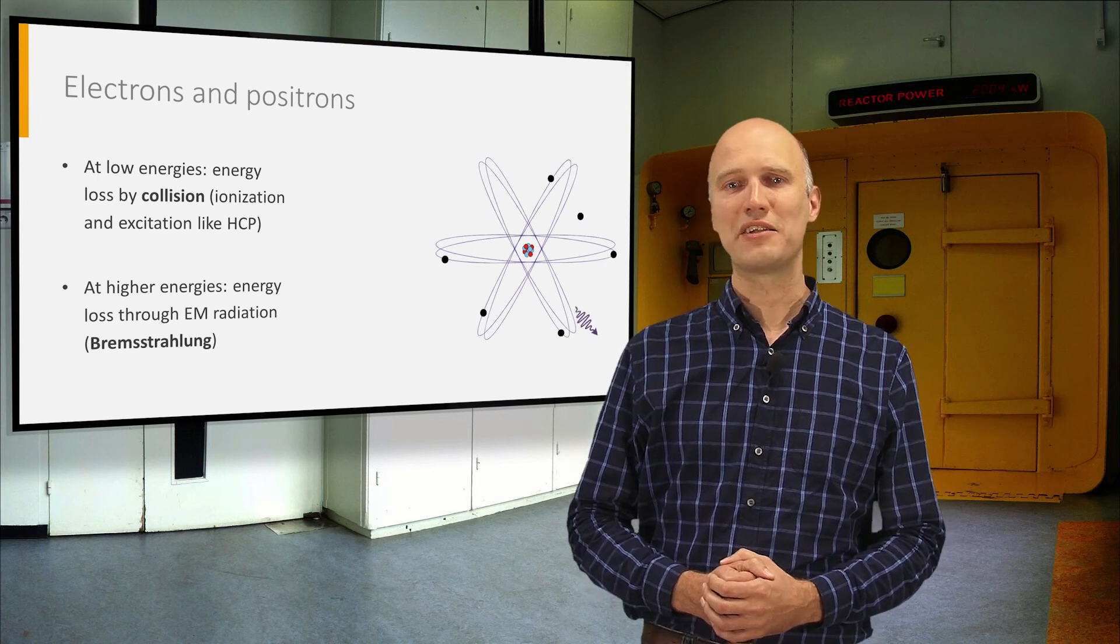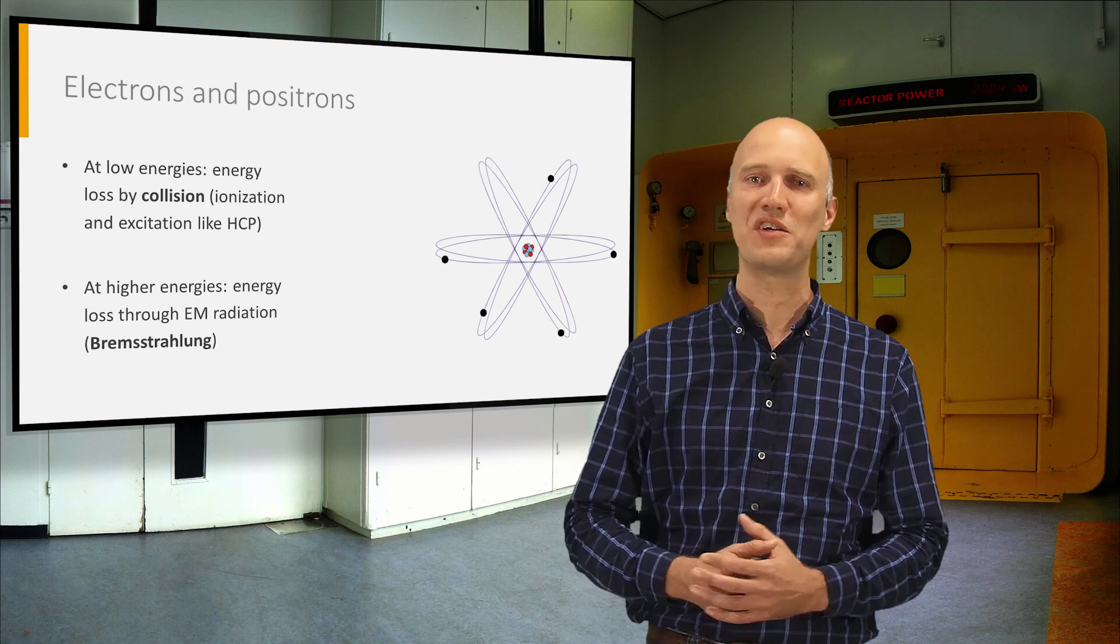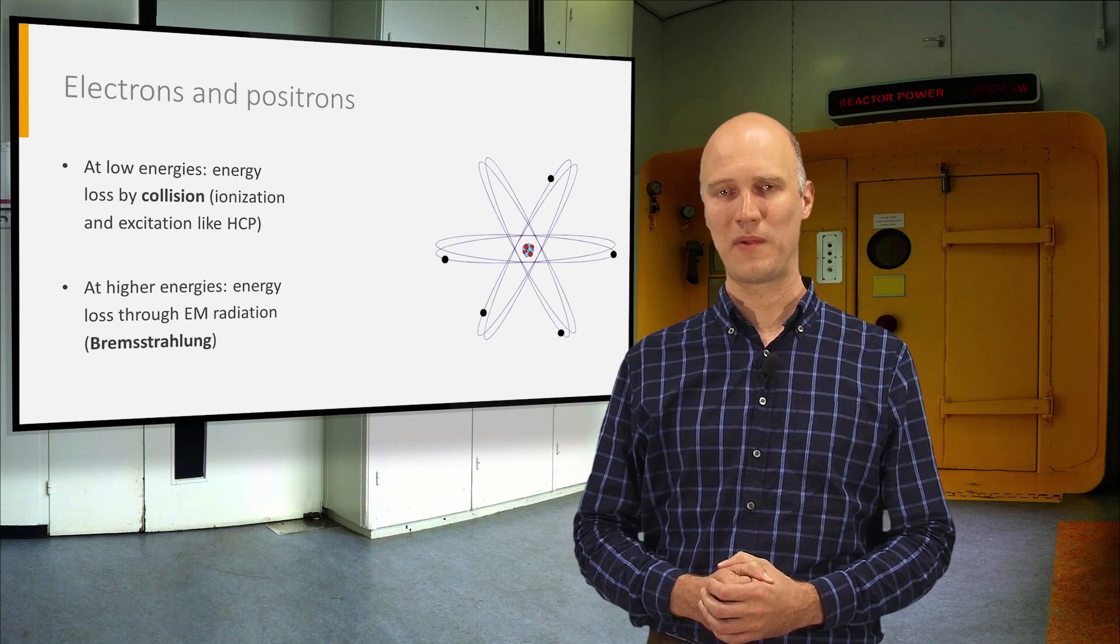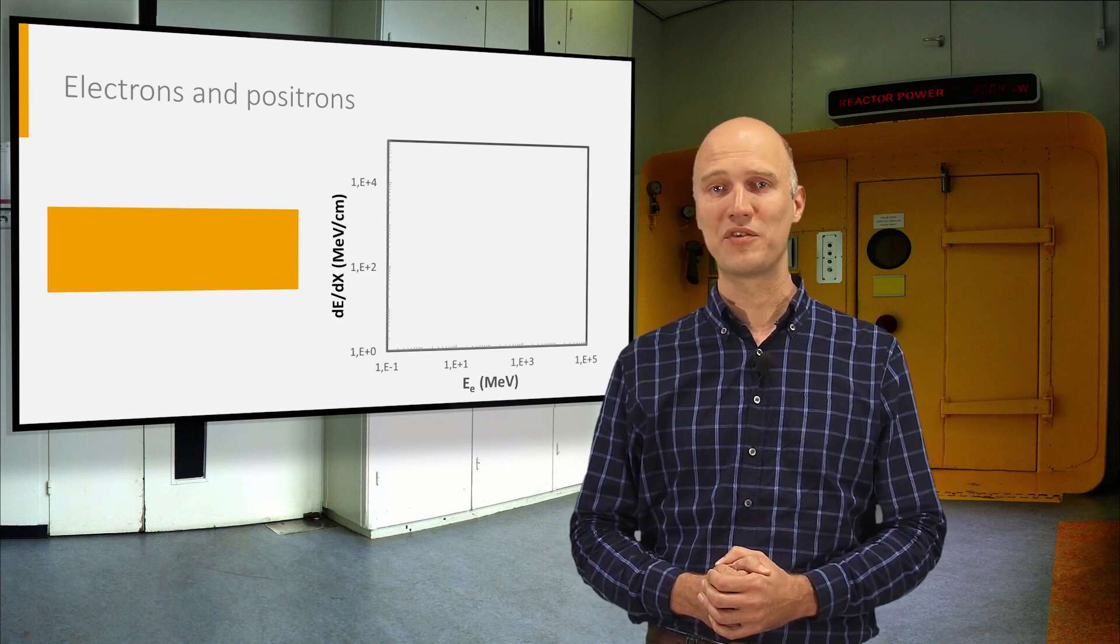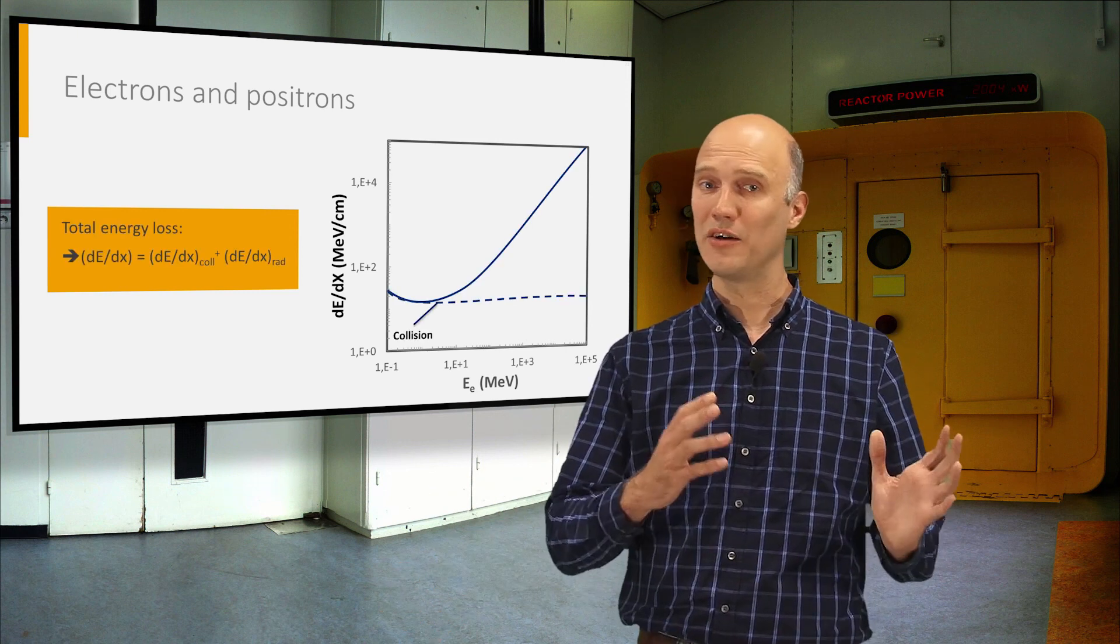In this process, electromagnetic radiation is emitted due to the acceleration or deceleration of the electron or positron in the electromagnetic field of a nucleus. The total energy loss of electrons and positrons is therefore the sum of two parts: a collision term and a radiation term.